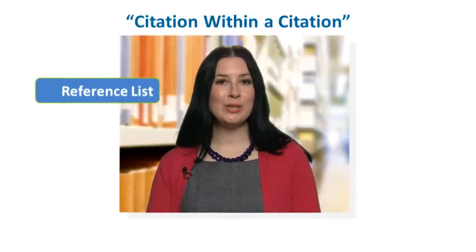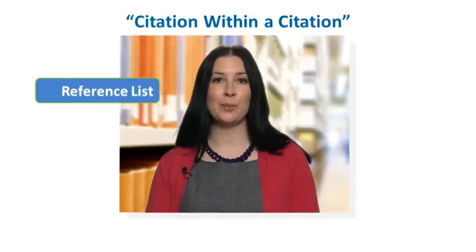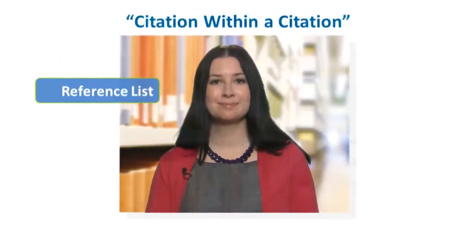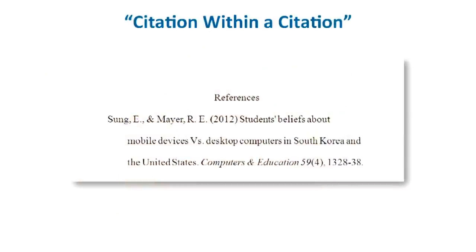Next, let's look at who you cite in your reference list at the end of your paper. That's easy. In your reference list, you only need to cite Sung and Meyer. Only create a separate entry for Clark if you actually located and read Clark's original article.